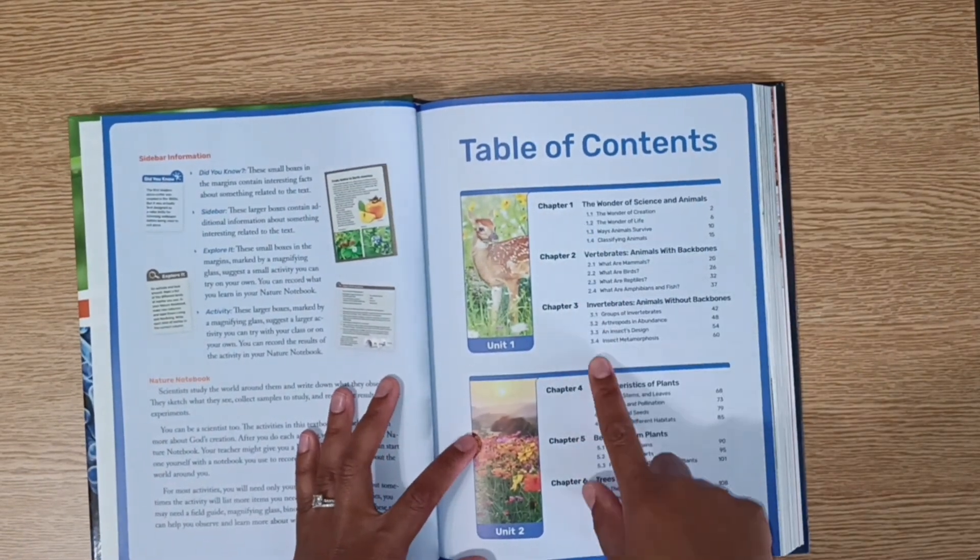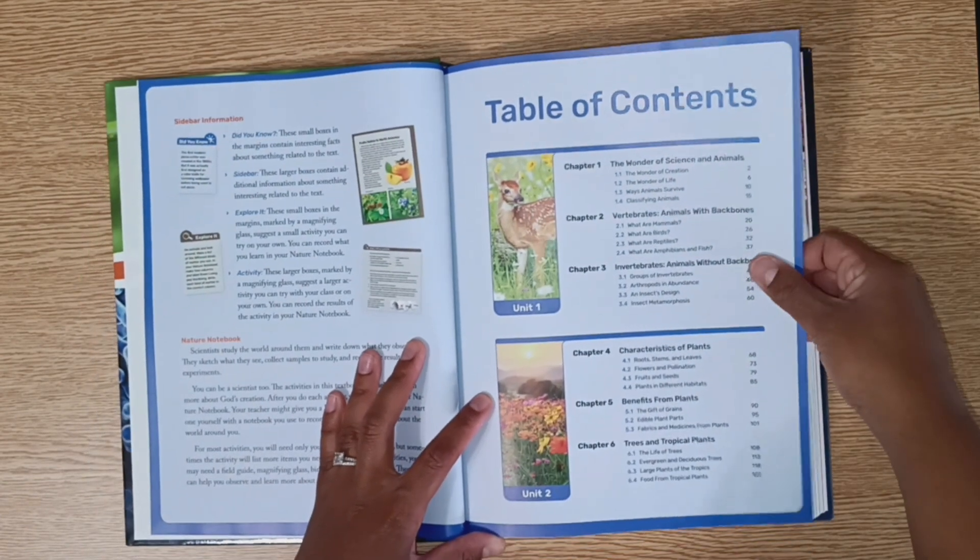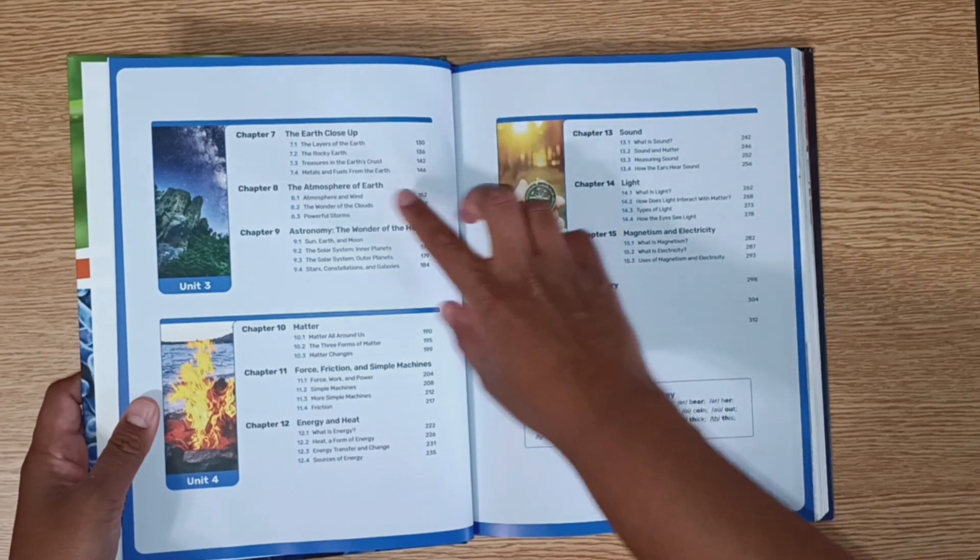Chapters 1 through 3 are on animals. Chapters 4, 5, and 6 are on plants. Chapters 7, 8, and 9 is about the earth, atmosphere, astronomy.